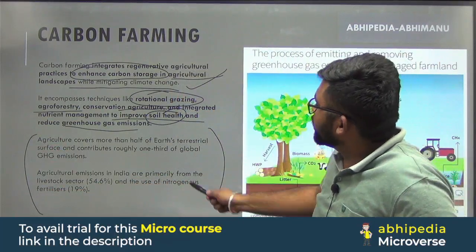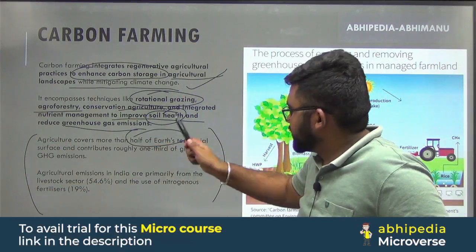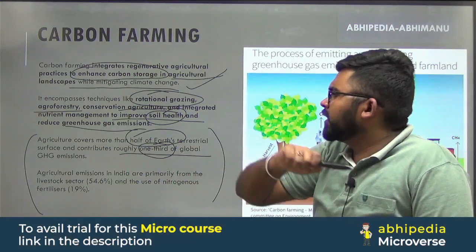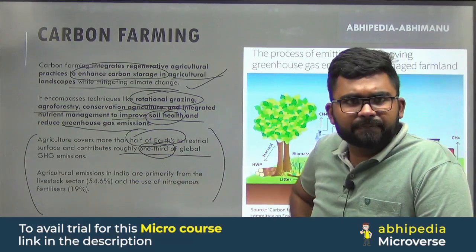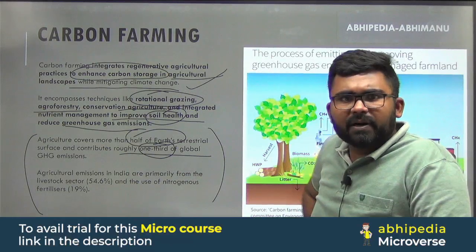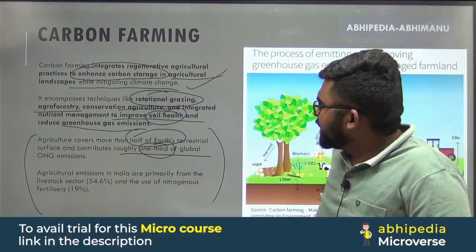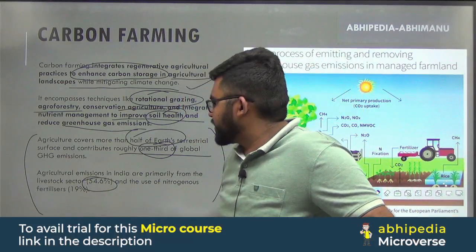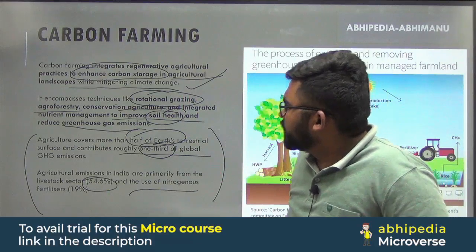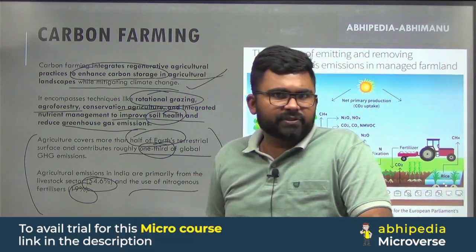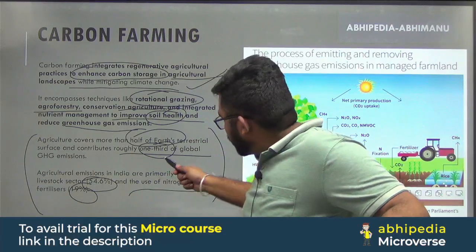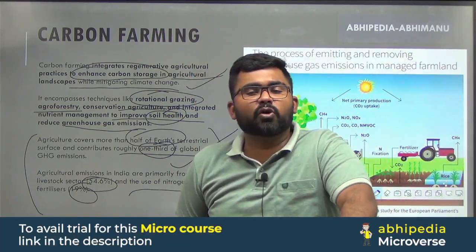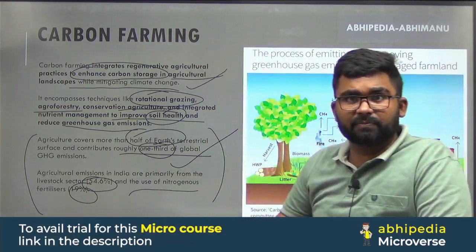What is important is that agriculture covers more than half of the Earth's terrestrial surface and contributes roughly one-third of global greenhouse gas emissions. In India specifically, agriculture emissions are primarily from the livestock sector at 54.6% and the use of fertilizers at 19%. This is why the carbon farming method is such an important topic.